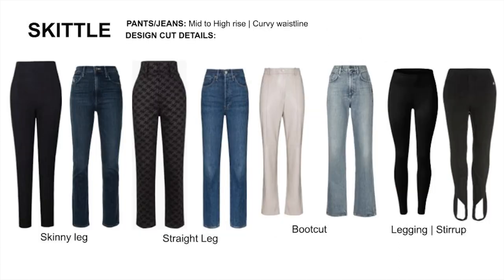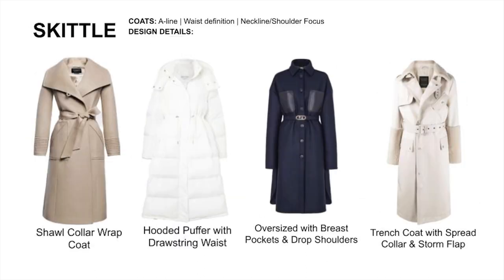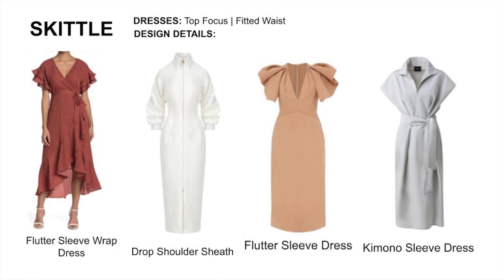For pants and jeans, go with mid to high rises. The waistline should be curvy and nipped in, and make sure the fit is not skin tight. For jackets, focus on the collar and shoulder details — make sure it isn't fitted. For coats, go with an A-line shape with either a big collar or upper body detail to draw the focus upwards. For dresses, go with sleeve details or an open neckline.